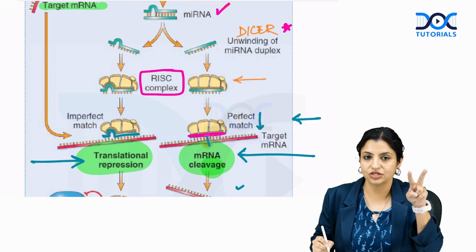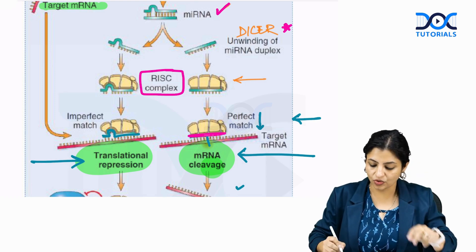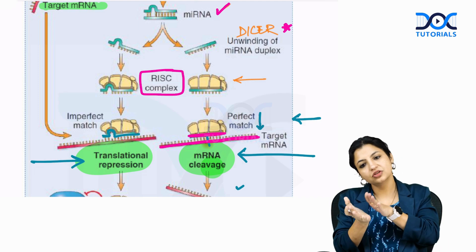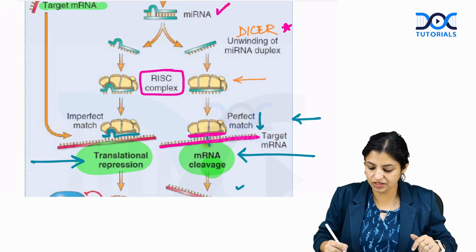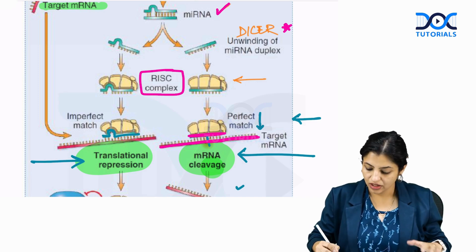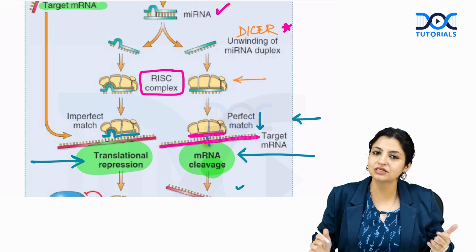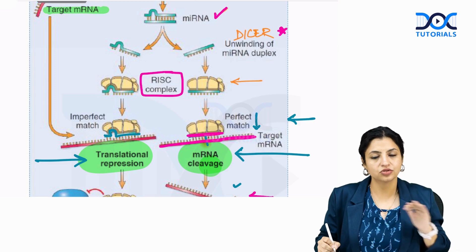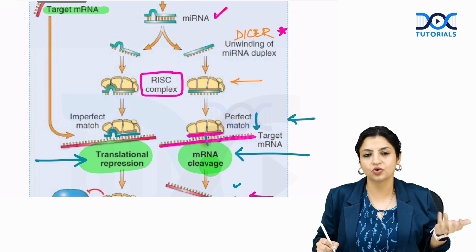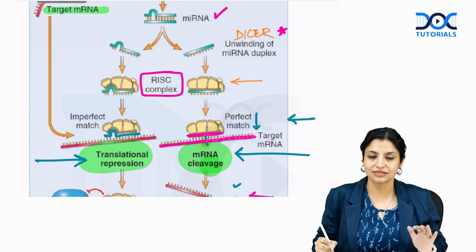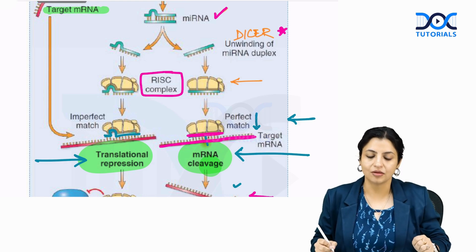Two things can happen. First, if the microRNA is a perfect match to the target mRNA, it will cut that mRNA. So if this is the sickle cell mRNA and it gets cut, there are no sickle cells in the peripheral blood and the patient is cured of sickle cell disease.